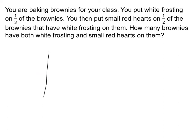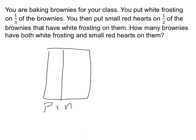Let's draw a picture. We start off with the same pan of brownies. We put frosting on a third of them: divide into three pieces, put white frosting on one. Then we put small red hearts on a half of the brownies that have white frosting — take that piece, divide it into two equal pieces, and put red hearts on one part.